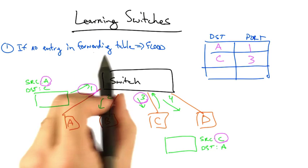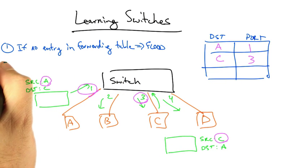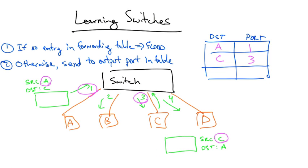So in summary, if a learning switch has no entry in the forwarding table, it must flood the frame on all outgoing ports. But otherwise, it can simply send that frame to the corresponding output port in the table.